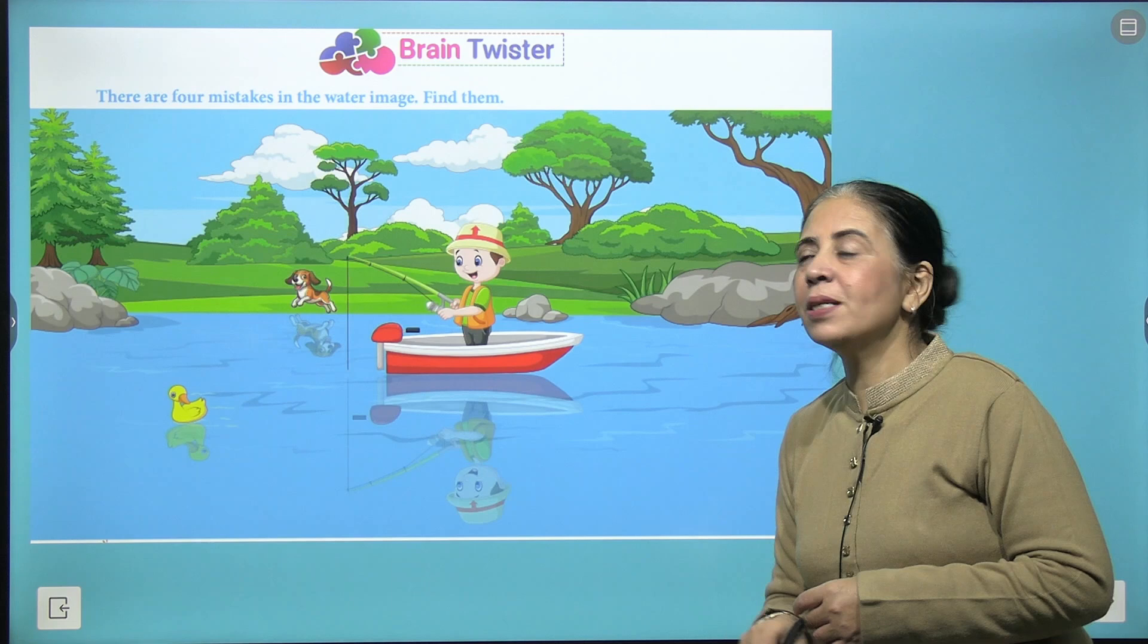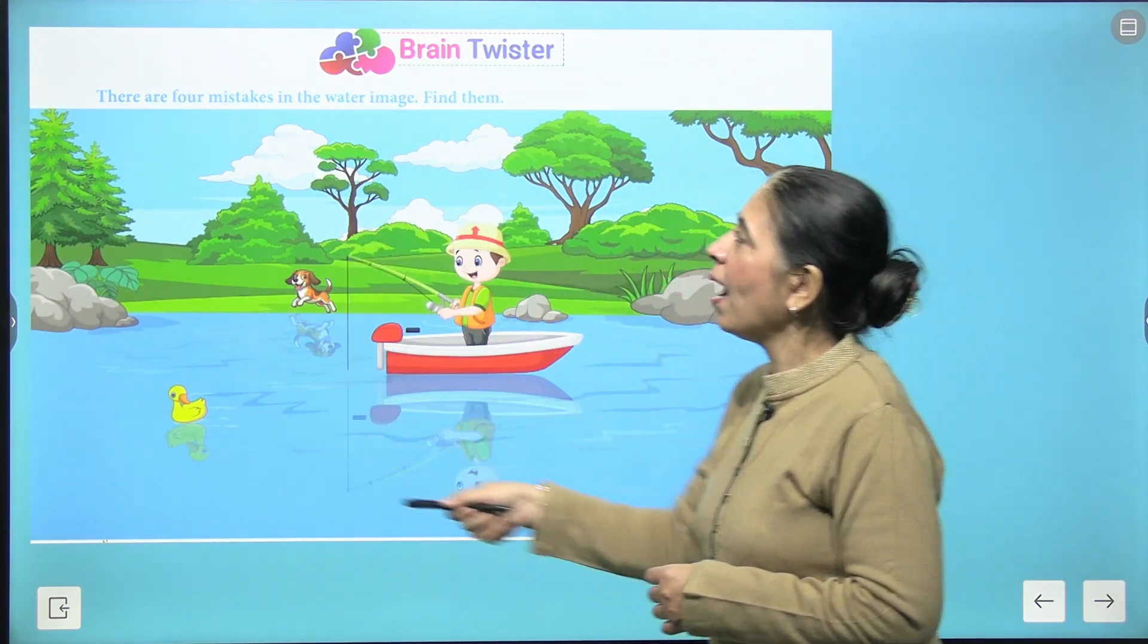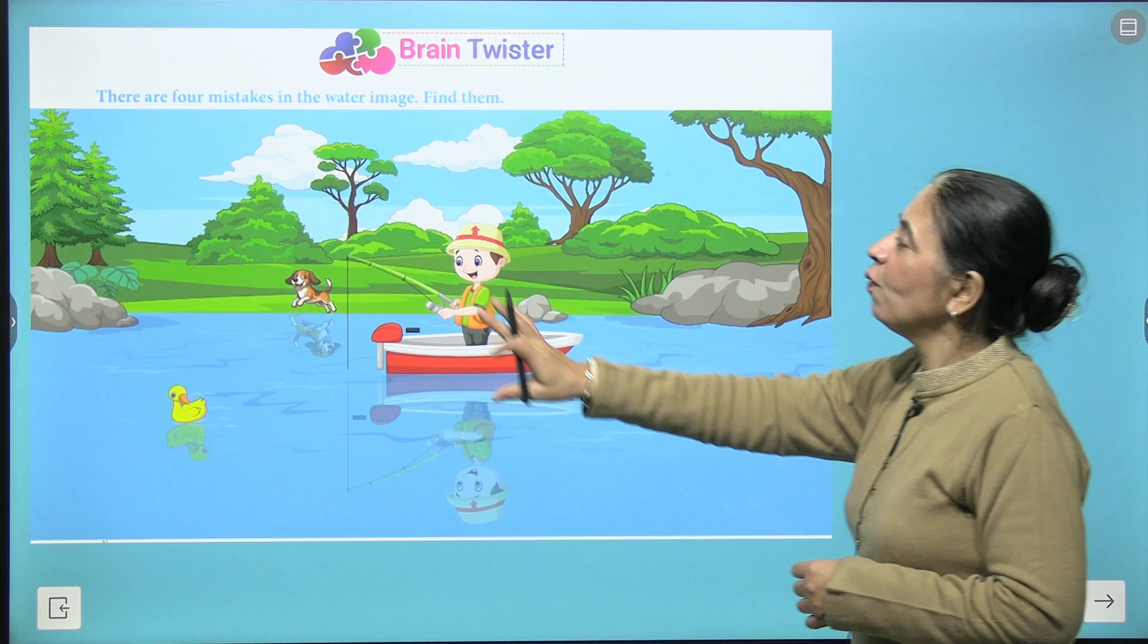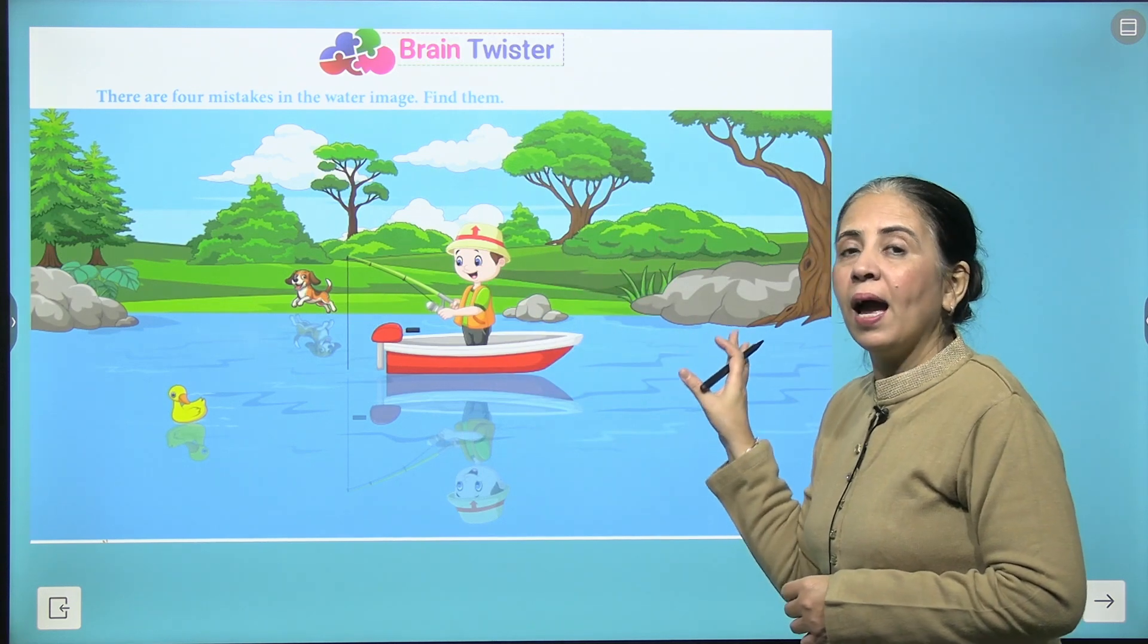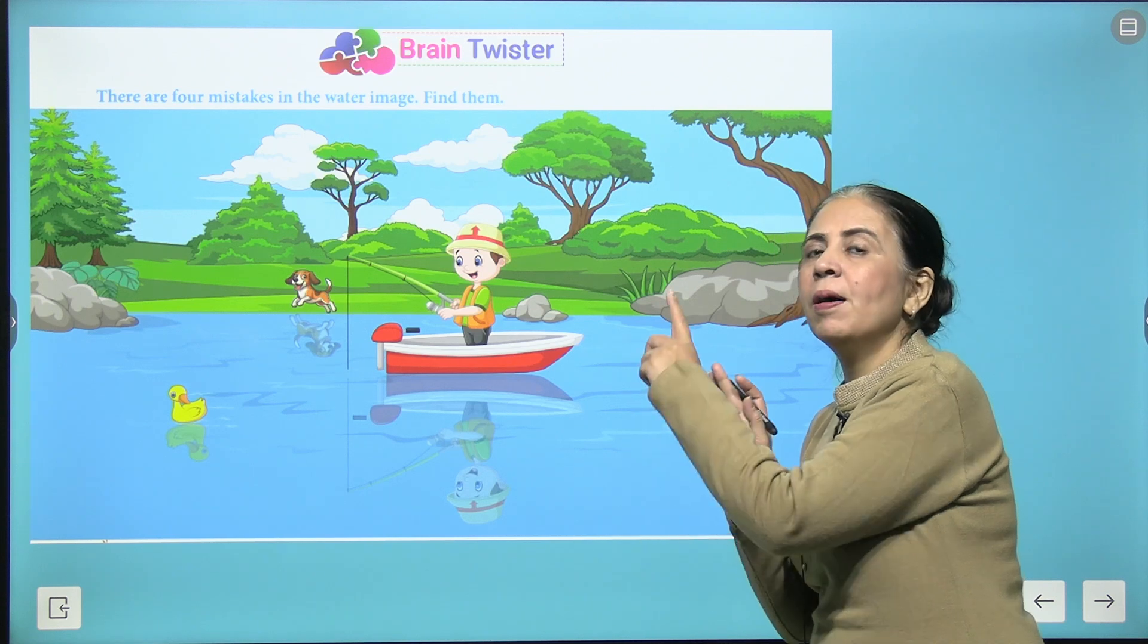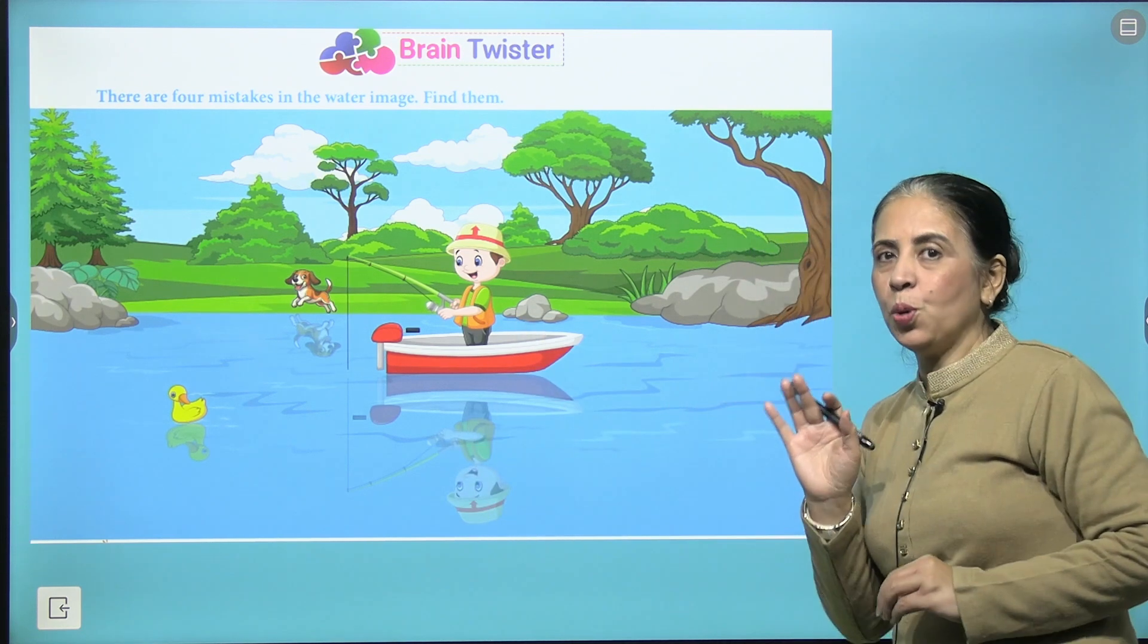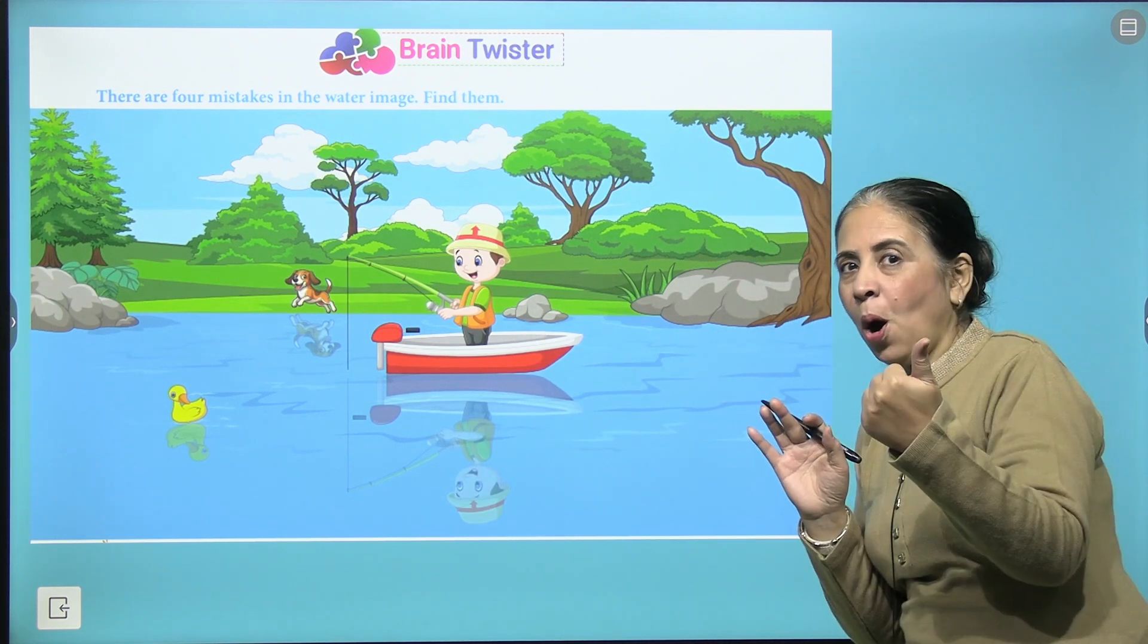The time is to look for the brain twister. Here we have the water image of this beautiful scene, and there are a few mistakes in it. So we have the answer, but you have to just spot the points where you observe the error. All the best!